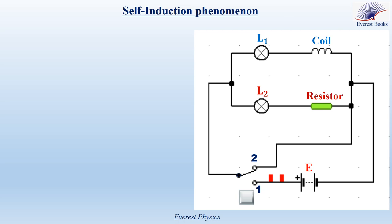This circuit includes an ideal battery, an SPDT switch. This switch has one input terminal and two output terminals, two identical lamps L1 and L2, a resistor, and a coil.